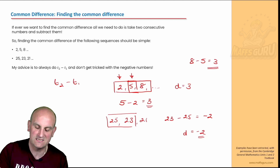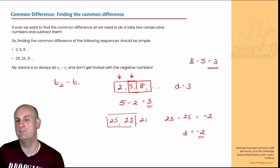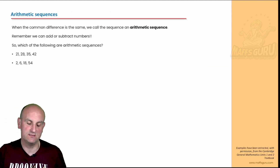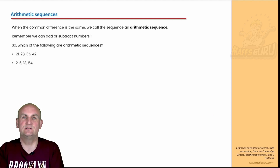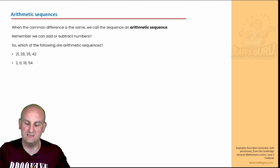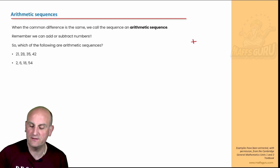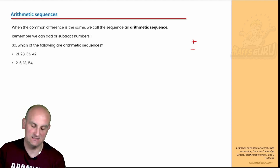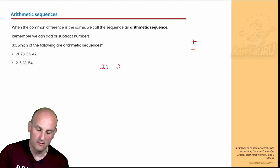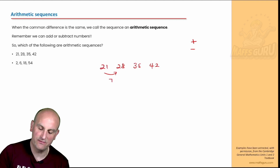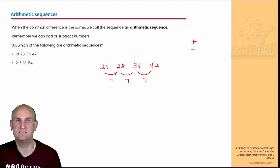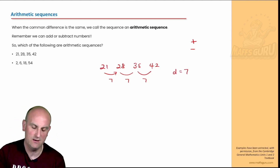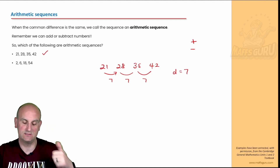So arithmetic sequences always have a common difference. To get from term to term, we can either add on the same number or we can take away the same number. So which of the following are arithmetic sequences? We've got 21, 28, 35 and 42. So I'm going to add on 7 there — can I do the same? Add on 7, add on 7. Because those numbers are the same, because there's a common difference of 7, I'm going to say that is an arithmetic sequence.